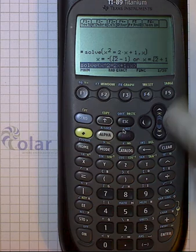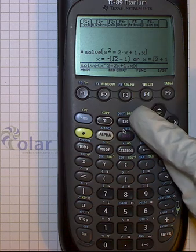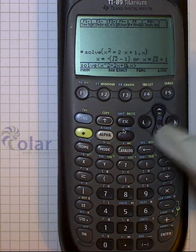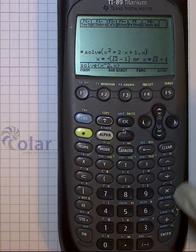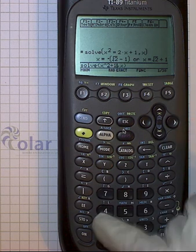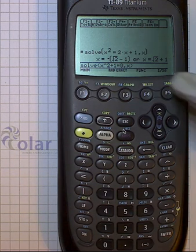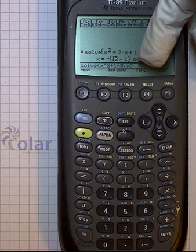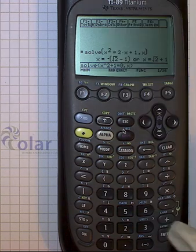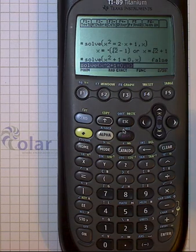But solve does not solve if the equation doesn't have a real solution. So if we look at something like x squared plus 1 equals 0, we know that there are no real solutions to the equation x squared plus 1 equals 0. And so solve cannot give you solutions here. I hit enter, and it says false.